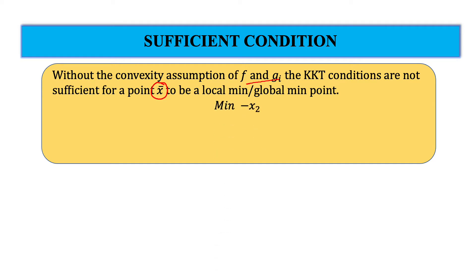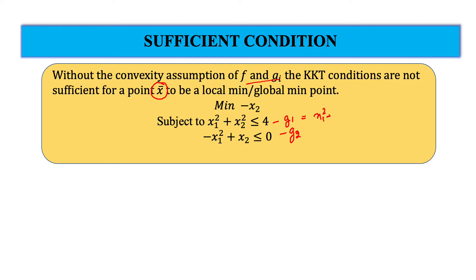For example, consider the problem: minimize F equals minus X2, subject to the condition X1 squared plus X2 squared less than or equals 4, and minus X1 squared plus X2 less than or equals 0. This is the first constraint and the second constraint is X1 squared plus X2 squared minus 4 less than or equals 0. Now we have to check whether all three functions are convex or not.